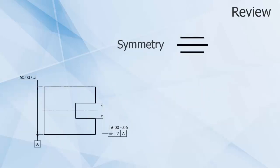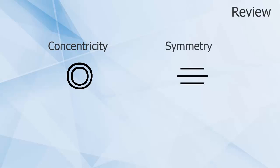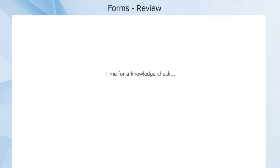Symmetry controls the location of median points of opposing points for parallel features in relation to a flat tolerance zone. Concentricity and symmetry are difficult to inspect and probably not what you want to use. Now it's time for an understanding check on all of the location callouts.